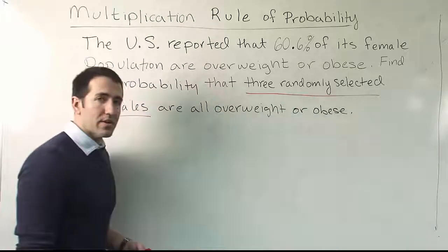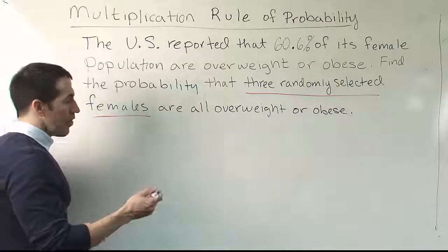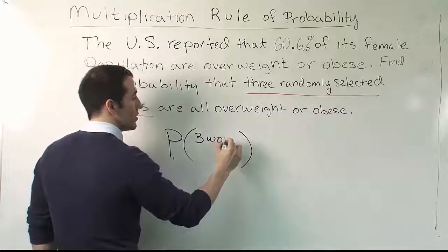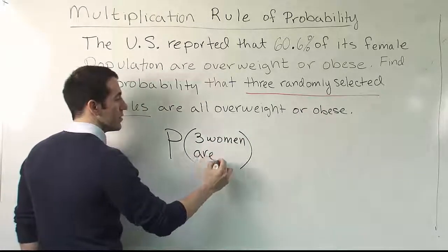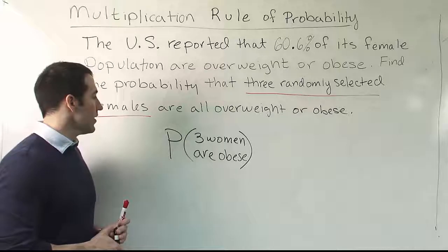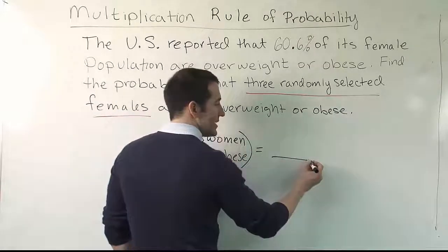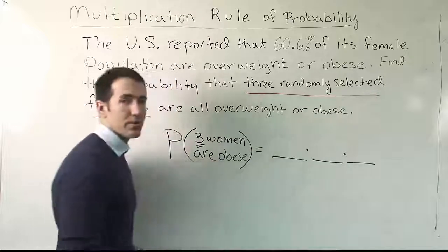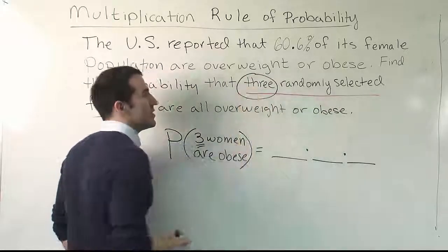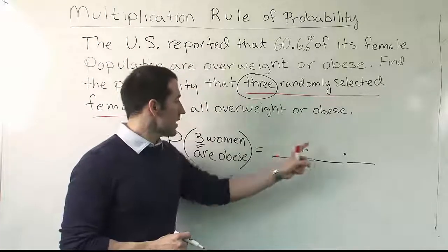We'll work this problem out with the assumption that the events are independent, and look at a dependent scenario in another video. For all multiplication rule probabilities, you want to write a probability statement. Here we're looking for the probability that all three of the selected women are obese. Since I'm selecting three women, I'm going to draw three spaces — three placeholders for the probabilities I need to calculate. That number three tells me two things: I'm dealing with the multiplication rule, and it tells me how many spaces to create.